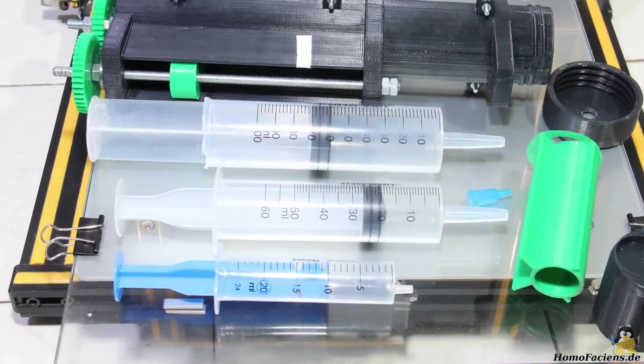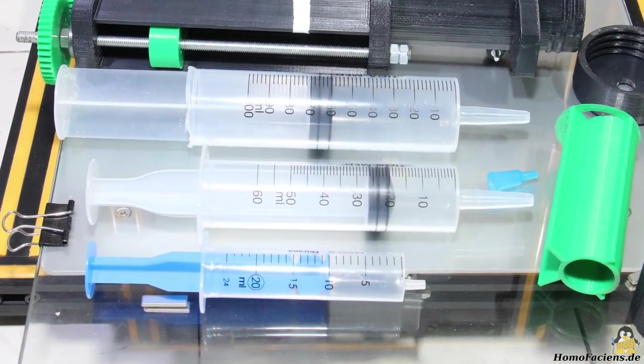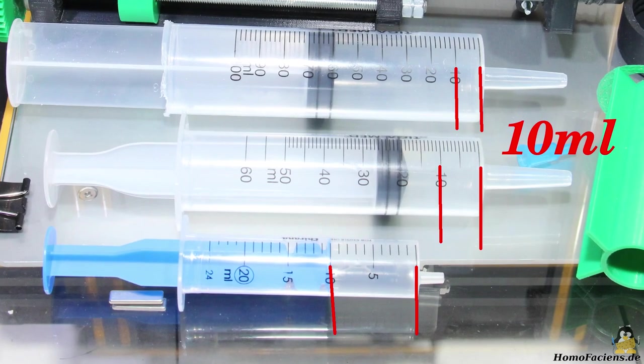With the cartridge you can use syringes with a capacity of up to 100ml. In principle, the smaller the diameter of the syringe, the easier it is to control the extrusion process, since less material is moved per millimeter of piston stroke.